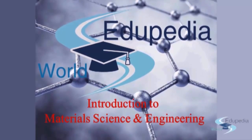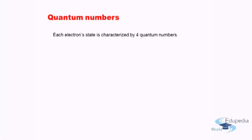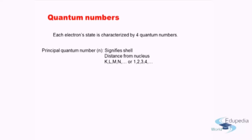Each electron has a specific address, which represents the location where an electron is located in an atom. The whole set of numbers used to define the state of the electron is characterized by four different quantum numbers, as we will see in this discussion.